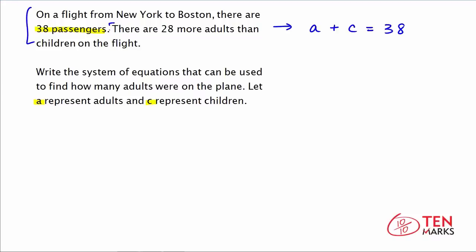Now let's think about the next part: there are 28 more adults than children on the flight. When you see this, you should think about subtraction — the difference between adults and children is 28, so A minus C equals 28. To solve this system, I'm going to use the elimination method. In the top equation you have positive C, and in the bottom equation you have negative C — opposite signs but equal value.